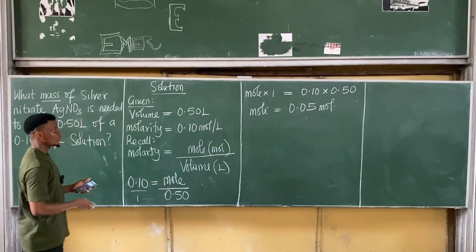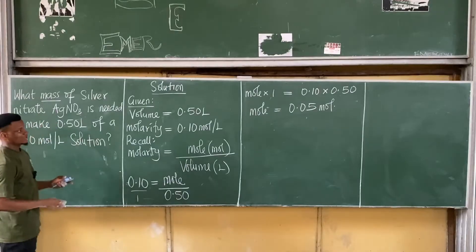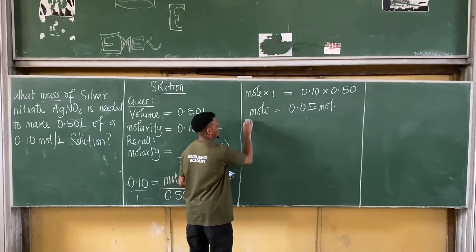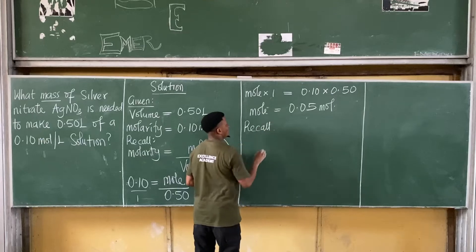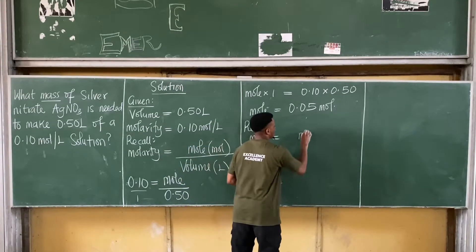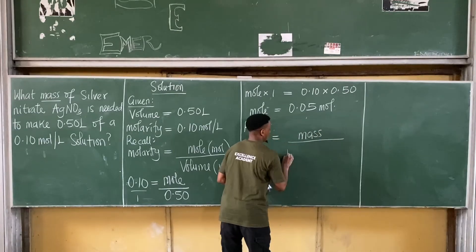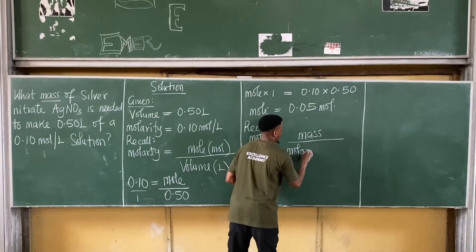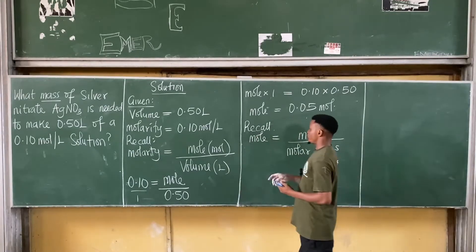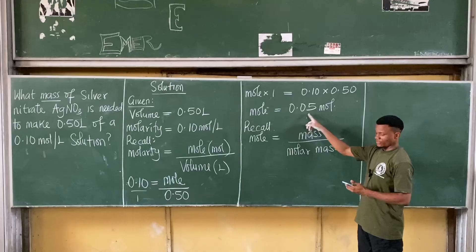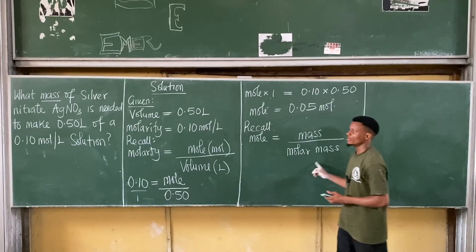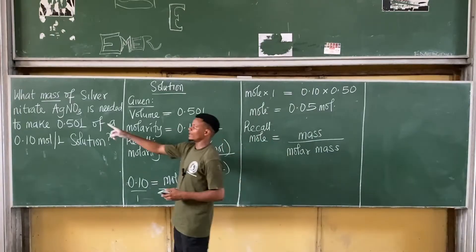We were not asked to find the moles. We were asked to find the mass. So how do we get mass from moles? Also recall your formula. Recall the formula that moles is equal to mass all over molar mass. Alright, I've already gotten the moles as 0.05. My task is to find molar mass.